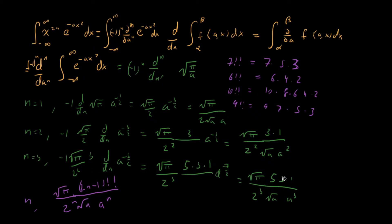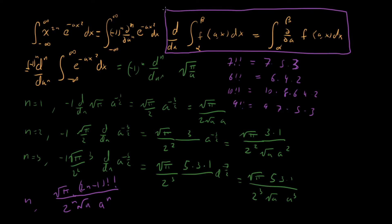So we've done it. We've taken this integral, which from the outset we didn't really know how to solve because of the monomial term out in front, and using Leibniz's rule — the differentiating under the integral sign trick — we reduced this hard integral to just taking a bunch of derivatives. By working out the combinatorics, we obtained a closed form solution using the double factorial.